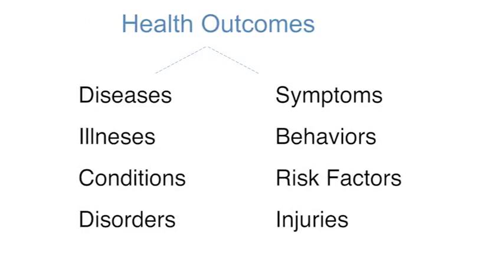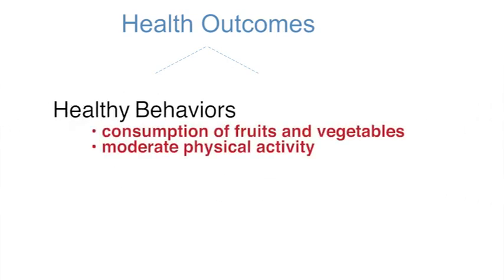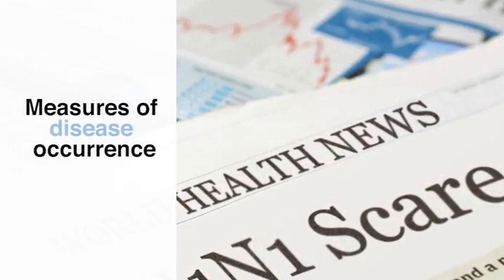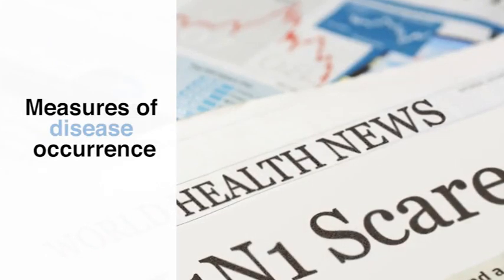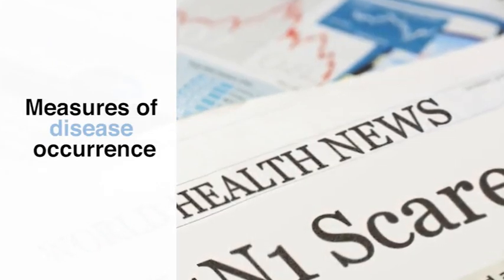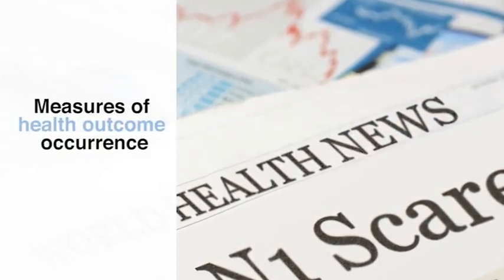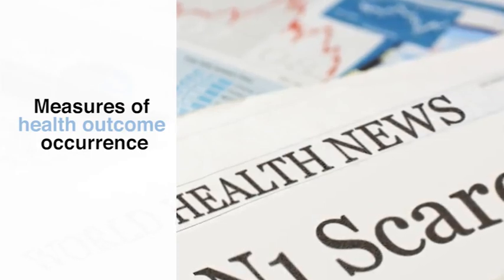Health outcomes can also include healthy behaviors, such as consumption of fruits and vegetables, or the benefits of moderate physical activity. You may commonly come across articles in the news that use measures of disease occurrence. However, in this course, in order to become more comprehensive and inclusive, we will frequently refer to measures of health outcome occurrence instead of disease occurrence, as these occurrence measures can be applied to many health outcomes and not just diseases.